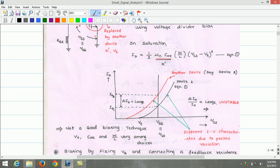So, in the next video, let us see the biasing scheme by fixing the gate voltage and connecting a resistance in the source terminal.